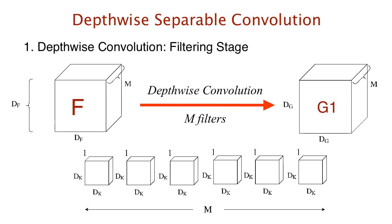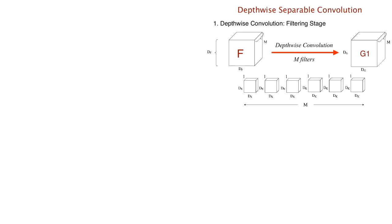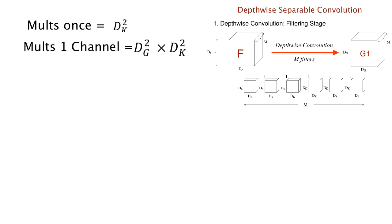Now let's look at the complexity of depthwise separable convolution, split into two phases. For depthwise convolution, the kernels have shape dk × dk × 1, so one convolution requires dk² multiplications. Applied over the entire input channel, this is performed dg × dg times, giving dg² × dk² multiplications per channel. Over all m input channels, the total multiplications in the depthwise phase is m × dg² × dk².